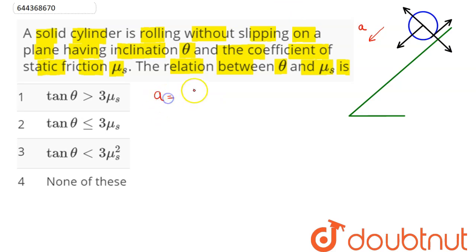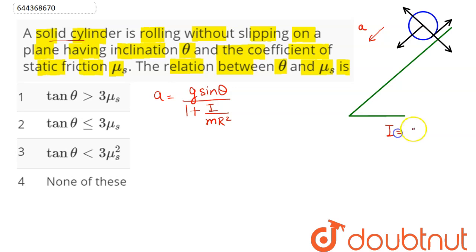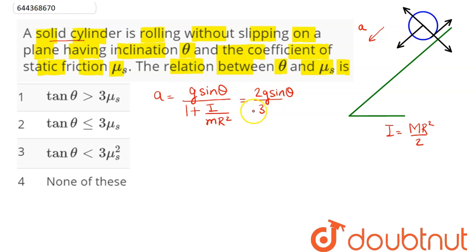This cylinder accelerates downward with acceleration given as g sine theta divided by (1 plus I divided by mr squared). For a solid cylinder, the moment of inertia about the center of mass is mr squared divided by 2, so the denominator becomes 1 plus 1/2, which is 3/2. Therefore, the acceleration of the solid cylinder is 2g sine theta divided by 3.